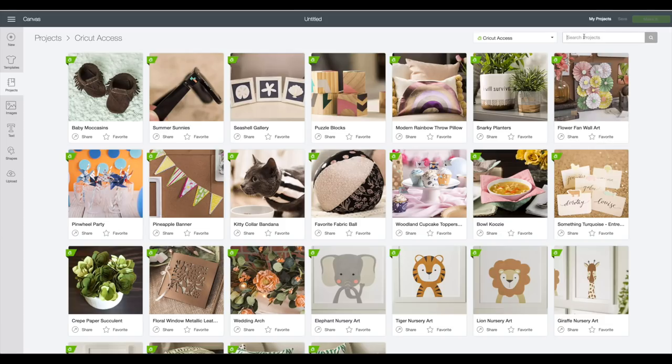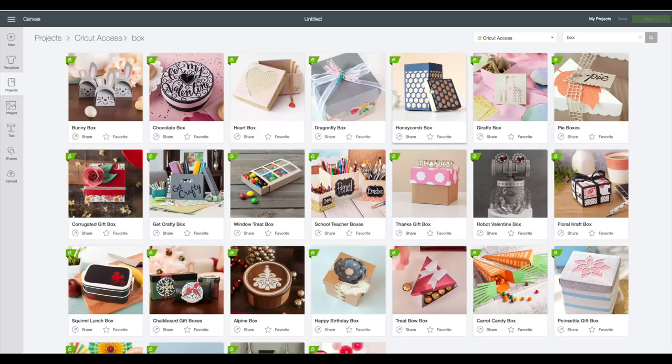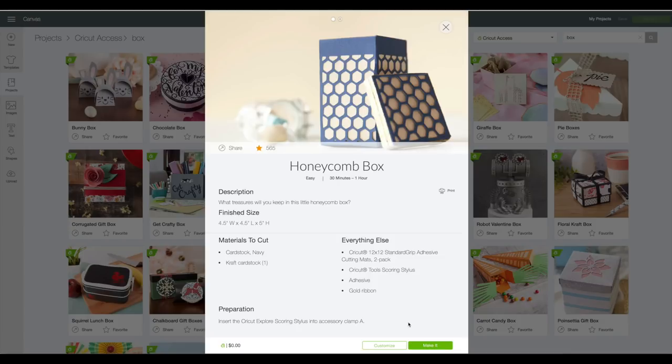In the search box in the upper right hand corner, type in the word box and then click on enter. And the box we are making is this one here. It is called the honeycomb box. Click on that. It will bring up a preview window. Click on customize.